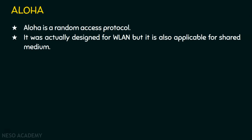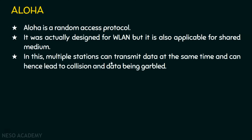Since aloha is a random access protocol, any station can transmit data at any time. What if two or more stations transmit the data at the same time? Multiple stations can transmit data at the same time, which can lead to collision and the data being garbled. This data will not be useful — it will be either lost or corrupted. So we will now see what collision is.